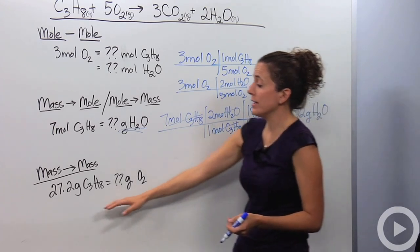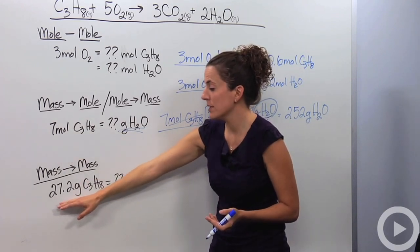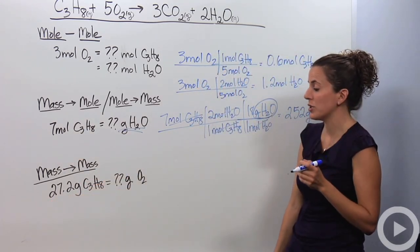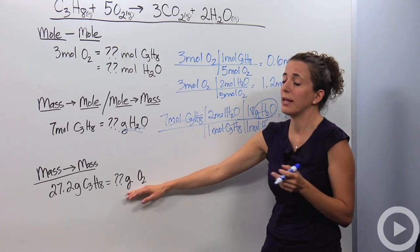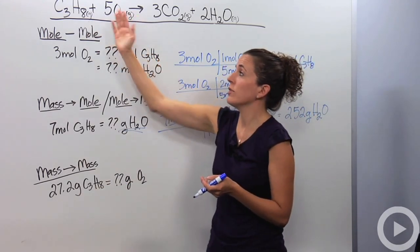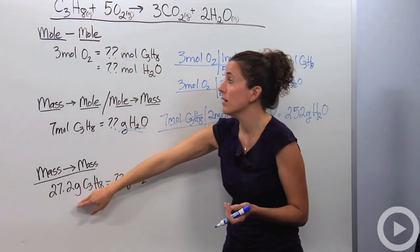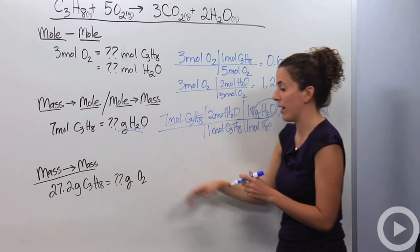Instead of having measured out 7 moles, because we don't measure out in moles, we measure out in grams. I'm given 27.2 grams of C3H8. How much oxygen gas am I going to need to react with that fully? Well, the only comparison I can have with these, the only relationship I know is molar relationships. So I have to change this to moles and then figure out the grams.